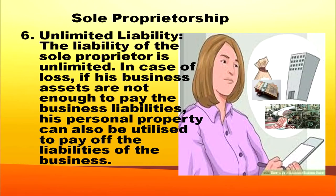Another important feature is unlimited liability, which is also considered a demerit. The liability of the sole proprietor is unlimited. In case of loss, if his business assets are not enough to pay the business liabilities, his personal property can also be utilized to pay off the liabilities of the business. If any business is running at a loss, the sole proprietor has to utilize his own personal property to clear the debts. Because of this demerit, other forms of organization have been formed to rectify this limitation.